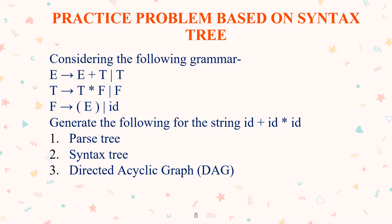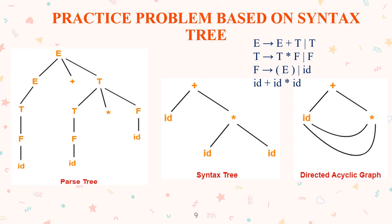Here is an example for constructing the parse tree, syntax tree, and directed acyclic graph. The grammar is given as: E implies E plus T or T; T implies T asterisk F or F; and F implies E within parenthesis or ID. Using these three equations, we need to generate the string ID plus ID asterisk ID. Start symbol E gives E plus T.